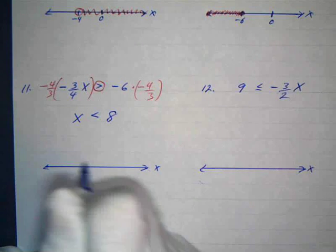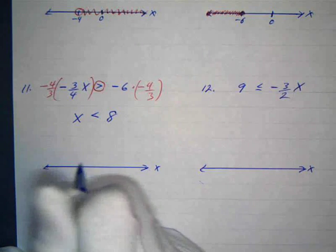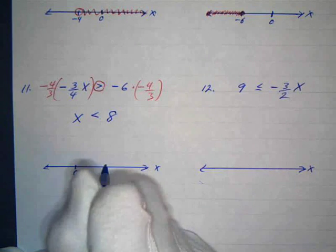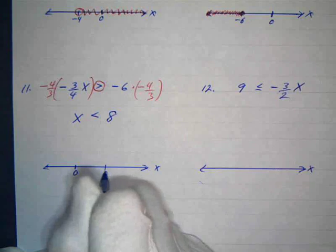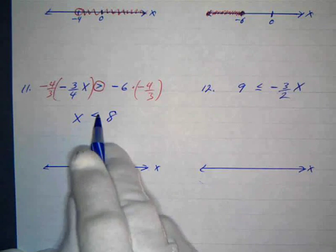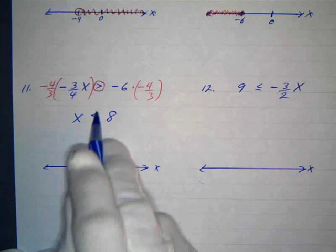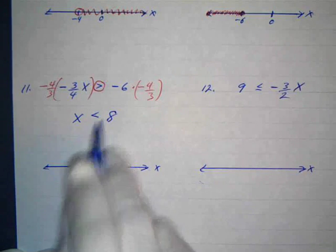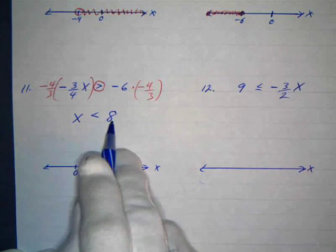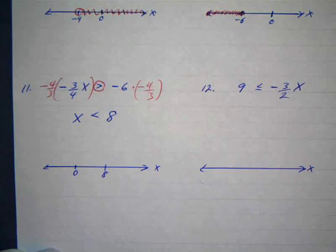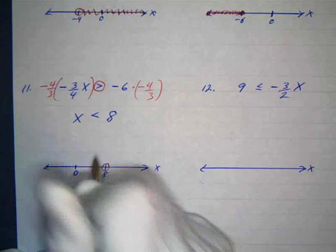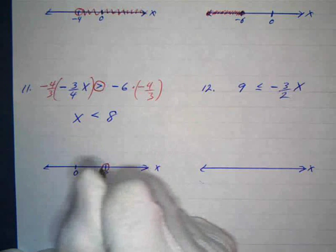8 is going to be to the right of 0, so I'll put 0 over here and 8 over here. Since my variable is on the left and this is the direction I'm going relative to 8, I shade to the left of 8 but not equal to 8. So I put an open circle at 8 and shade in that direction.